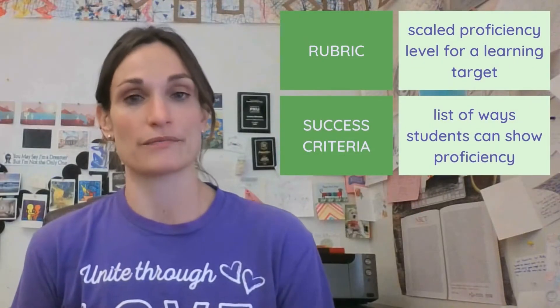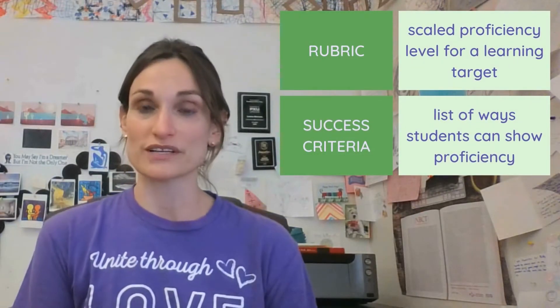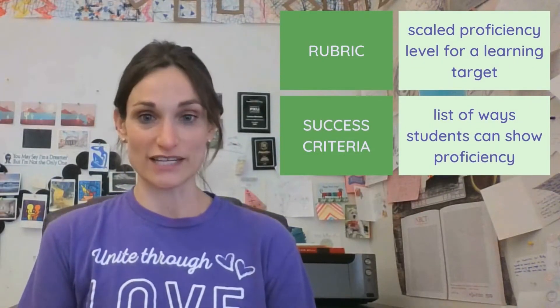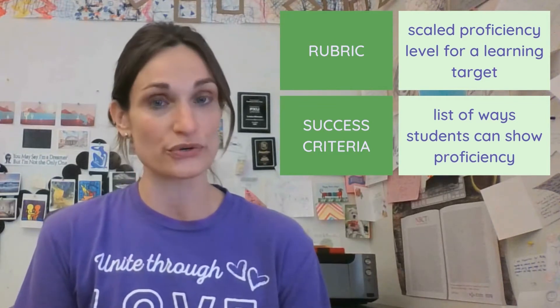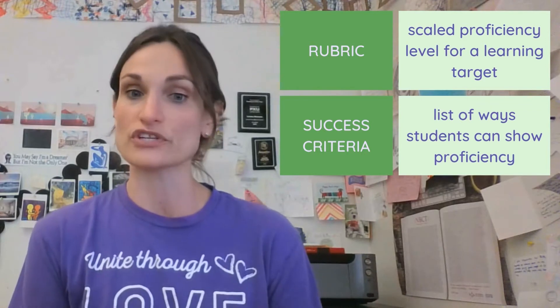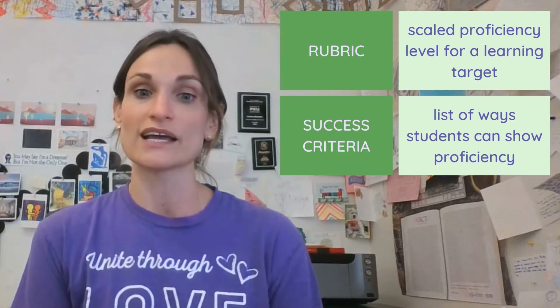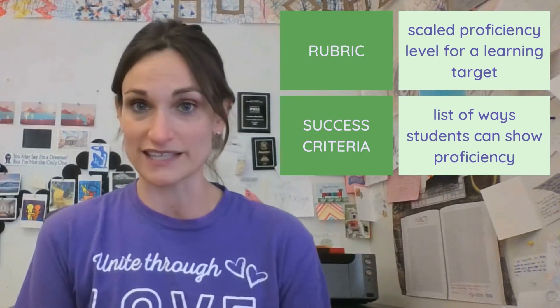Depending on the content area, the number of competencies can range from 4 to 8, and the number of learning targets can range from 5 to 10. These competencies and learning targets are assessed multiple times throughout the term, but these can still be quite broad. So we use rubrics with success criteria and scaled learning targets so students know exactly what they need to do to demonstrate their proficiency level in one or more skills for a specific assessment.